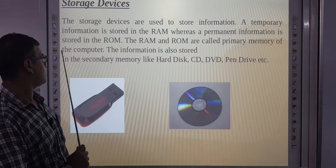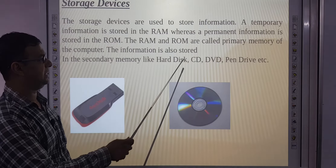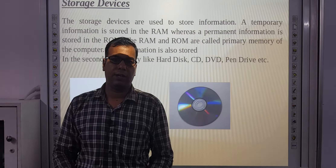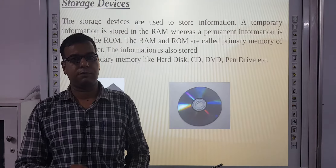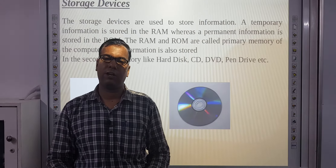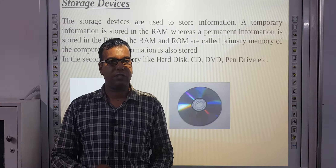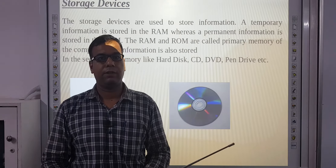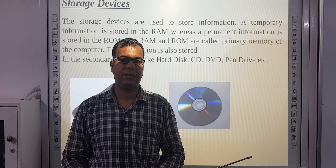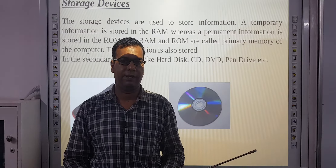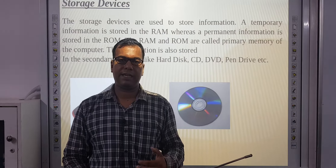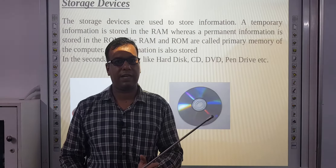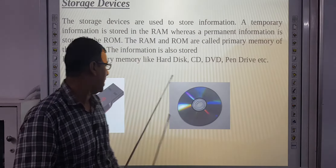Information is also stored in secondary memory like hard disk, CD drive, pen drive, etc. Suppose maine MS Word open kiya aur ek application type ki — woh temporary RAM mein store hoti hai. Jaise maine save pe click kiya, sara data secondary memory, just like hard disk, mein transfer ho jaata hai.